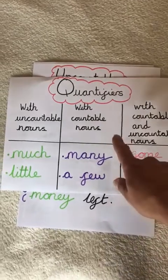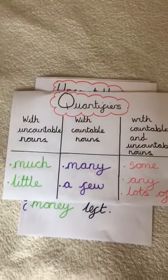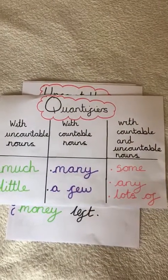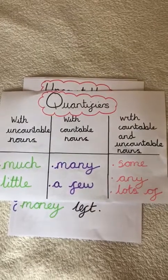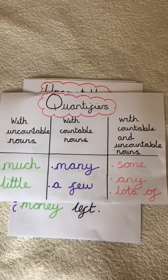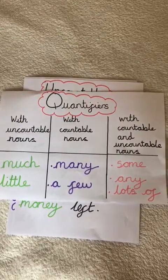Countable nouns are nouns that you can count. They can come in singular and plural forms. For example, apple or apples.